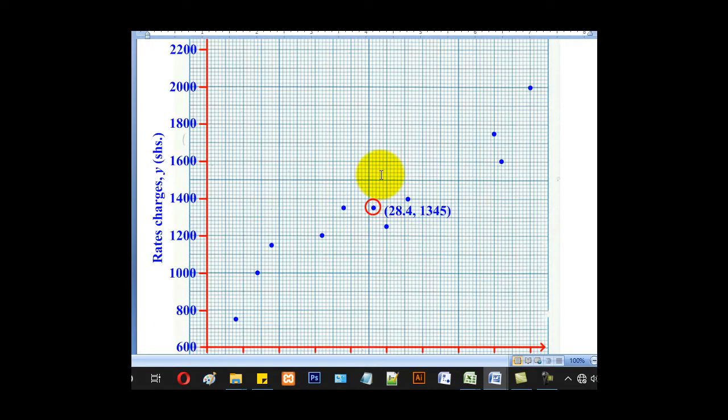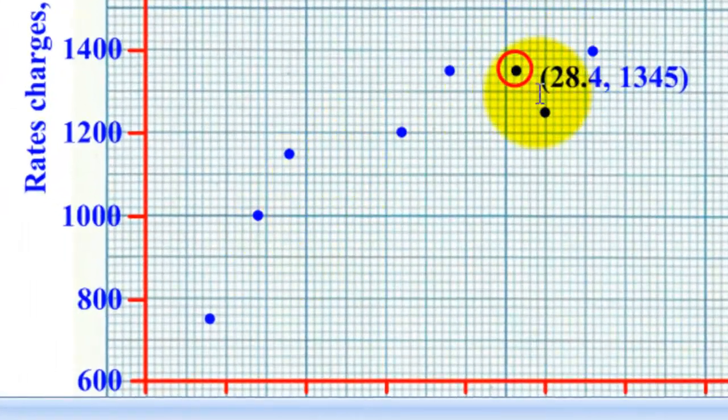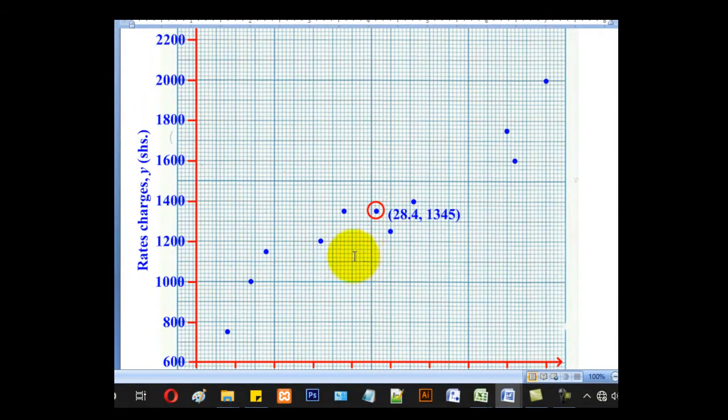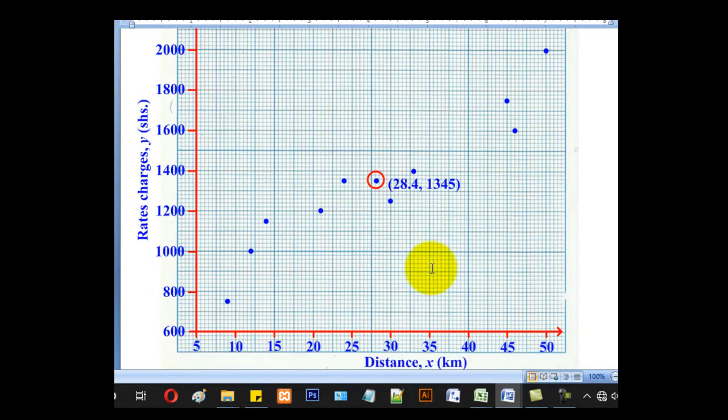So after getting the mean point, you have to add it there in the scatter points. So now these were 10. Now we add another one to make 11. After getting that, we have to follow the rule. It says that draw a line such that it passes through this mean point and any one or more of these other points, ensuring that it leaves equal or almost equal points on either side.